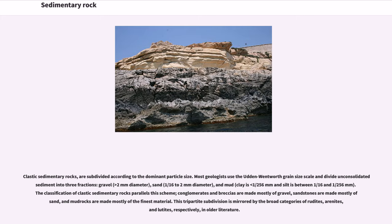Most geologists use the Udden-Wentworth grain size scale and divide unconsolidated sediment into three fractions: gravel, sand, and mud. The classification of clastic sedimentary rocks parallels this scheme — conglomerates and breccias are made mostly of gravel, sandstones are made mostly of sand, and mud rocks are made mostly of the finest material.